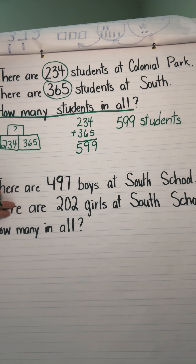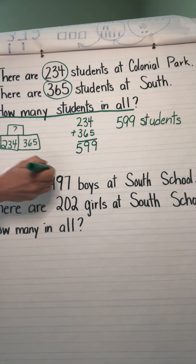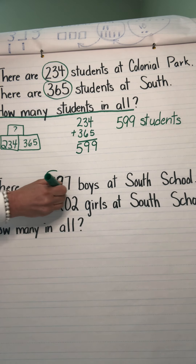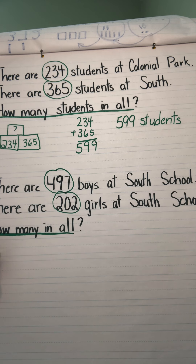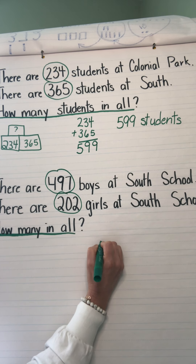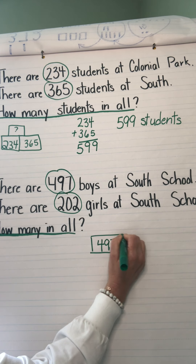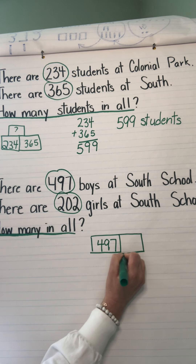Let's take a look at our second problem. There are 497 boys at South School — I made up these numbers, they're not true — and there are 202 girls at South School. How many in all? We know we have 497 boys and 202 girls. 'In all' is giving us a clue about the operation. Mrs. Bruins is a big fan of the diagram, so I'm going to write 497 as one part and 202 as another part, and I'm looking for my whole.